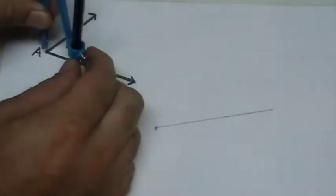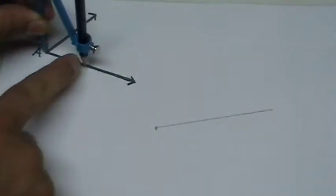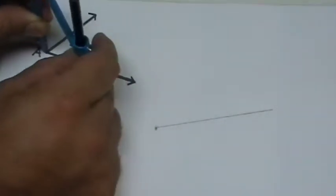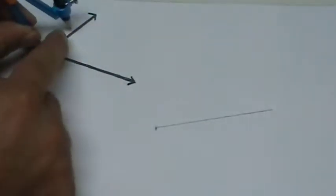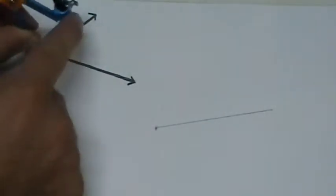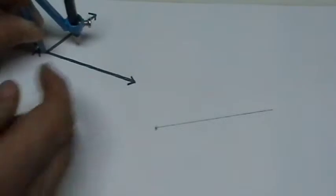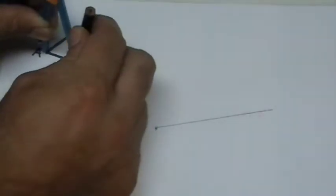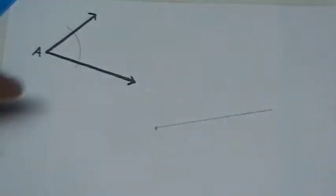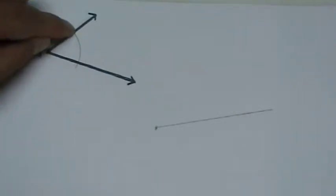I'm going to place it on the original angle. I want to make sure that the compass tool is not too far open. I want to make sure I hit both rays of the angle. Now I'll draw my arc through and we see that there are two intersection points.